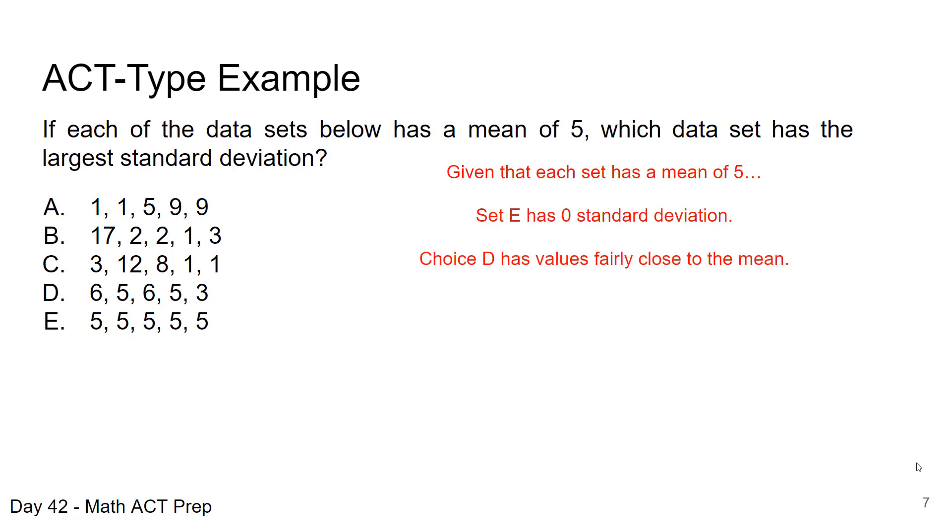Next, I notice from choice D, when I look at the values there of 6, 5, 6, 5, and 3, two of those values are 5 itself. And then 6 is very close to 5, and 3 is only 2 units away from 5. So that's going to be a relatively small standard deviation.